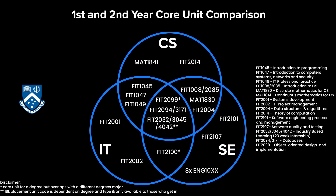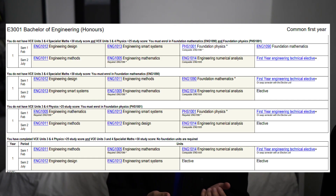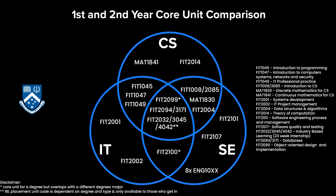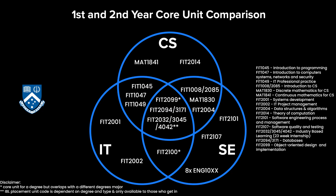In the SE degree, you are also required to complete up to eight engineering units in your first year, as well as two specialized software engineering units like software engineering, software engineering process and management, and software quality and testing. And lastly, if you choose to pursue a cybersecurity major within IT, you'll also have the opportunity to take the operating systems unit, which is a core for software engineering.